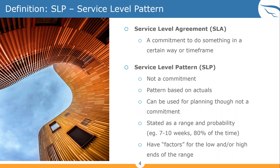An SLP is stated as a range and probability. For example, if someone asked how long to get a team to self-sufficient in agile, I might say 7 to 10 weeks, 80% of the time. I can also have factors for why it's below 7 or above 10 — like if the team was geographically distributed, that's why it took 15 weeks instead of 10. By having those factors, you can use them in estimation too. An SLP is about looking for patterns and using them for smart planning without forcing people to commit to those patterns.